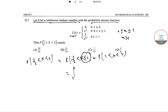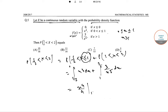So now integrating: from 1/2 to 1 of x cubed dx, plus 3/x to the power 5, integrating from 1 to 2 dx. So we get x to the power 4 by 4, with limits 1/2 and 1, plus 3 times x to the power minus 4 by minus 4, with limits 1 and 2.